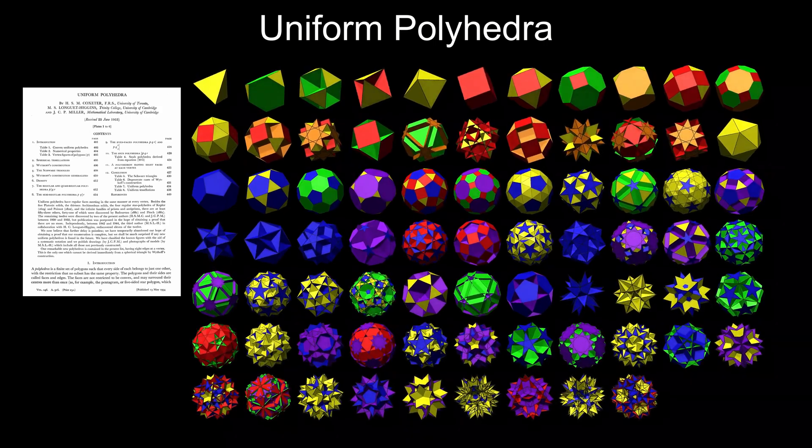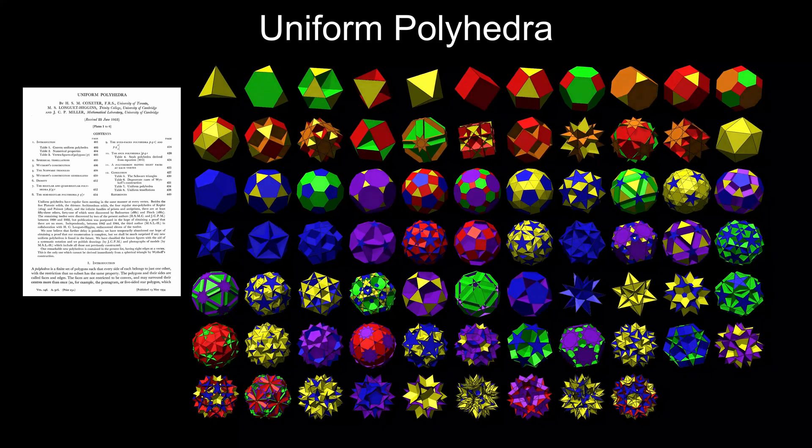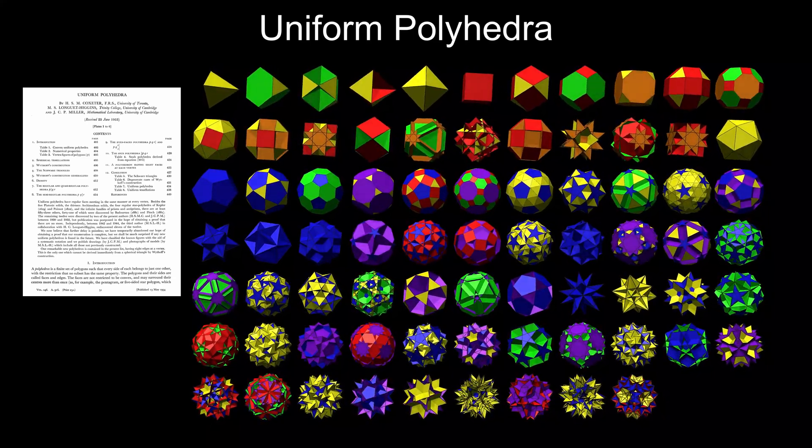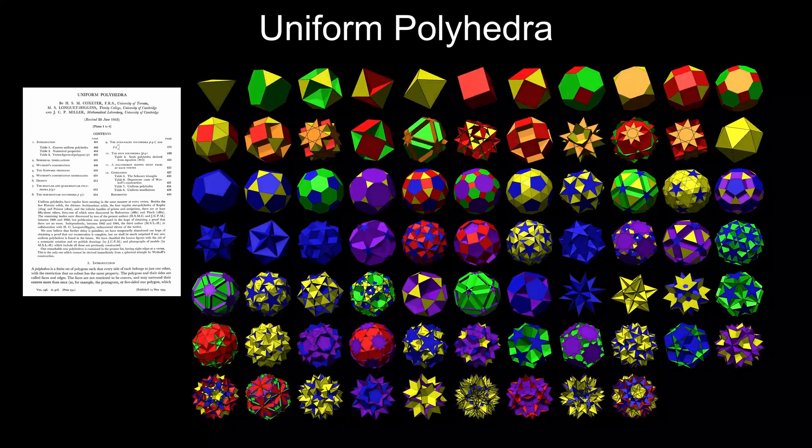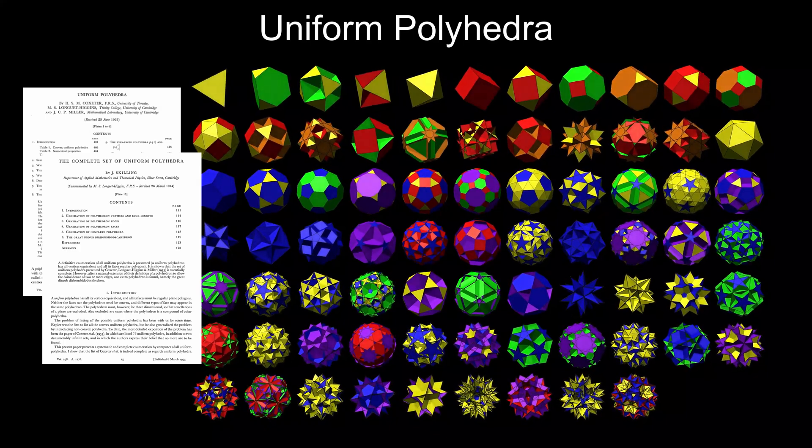Some 20 years after Coxeter, Miller and Longuet-Higgins' list of 75 uniform polyhedra was published, in 1975 John Skilling of Cambridge University developed a computer-assisted method of systematically generating all the uniform polyhedra.